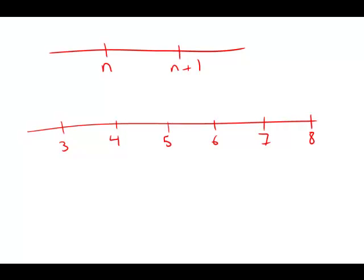On a scale that measures the intensity of a certain phenomenon, a reading of n plus 1 corresponds to an intensity that is 10 times the intensity corresponding to a reading of n. So in other words, if we go up by one notch on this scale, the intensity increases 10 times.